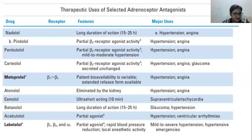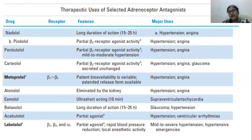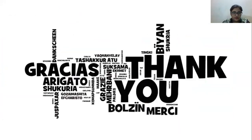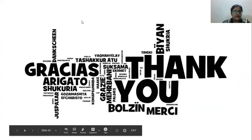Labetalol blocks beta 1, beta 2, and alpha 1 receptors and has partial agonist activity. It causes rapid blood pressure reduction, has local anesthetic activity, and is given to treat mildly severe hypertension and hypertensive emergencies. That covers all the material for this lecture.